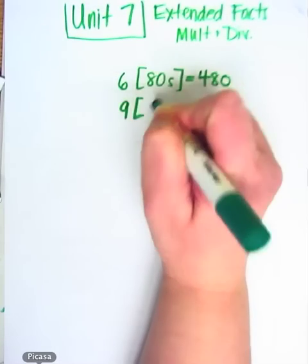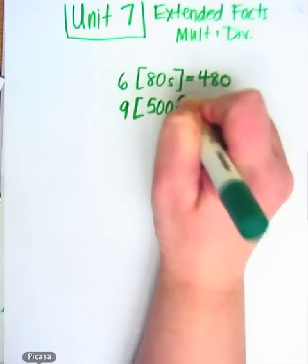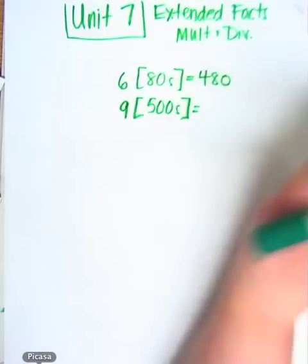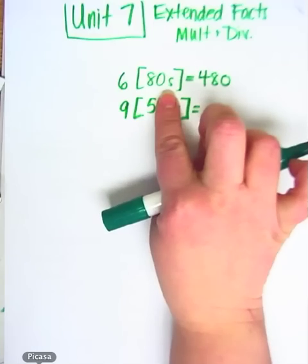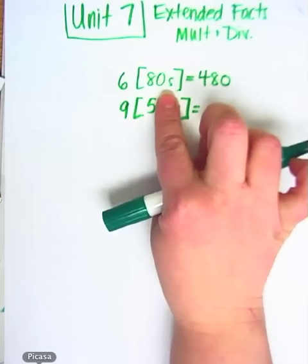Let's look at nine five hundreds. Oh my goodness. Five hundred times nine. How are we going to do that? Well, once again, you're going to cover the two zeros, and you're going to look at it as nine times five. Now what's nine times five? Forty-five.